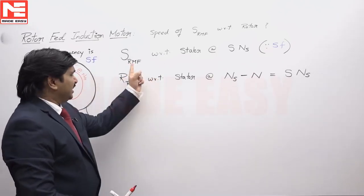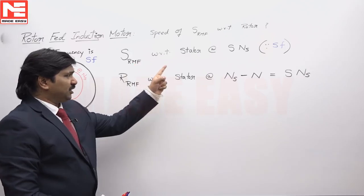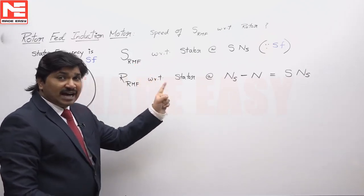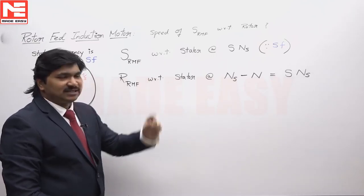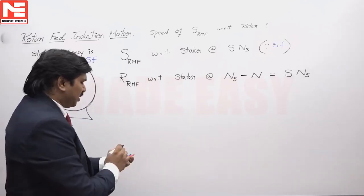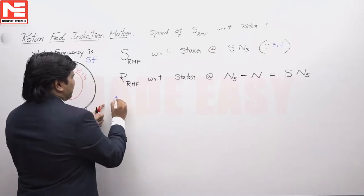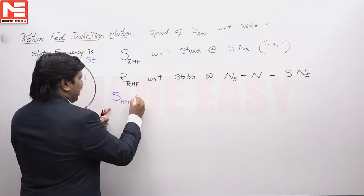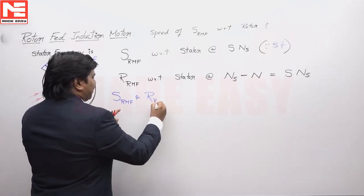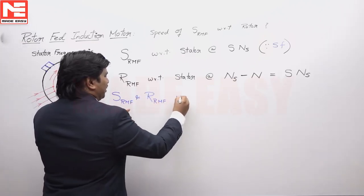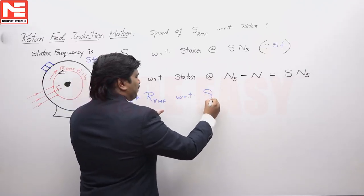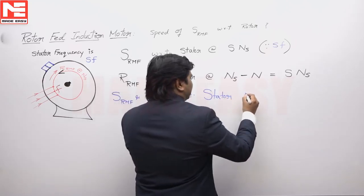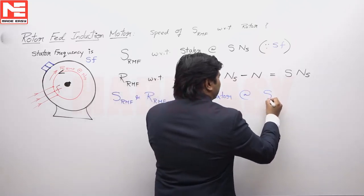Now combining these two statements: the stator RMF with respect to a stationary point is SNS, and the rotor RMF with respect to a stationary point is also SNS. So both the stator RMF and rotor RMF with respect to a stationary reference — or with respect to the stator — are at SNS.